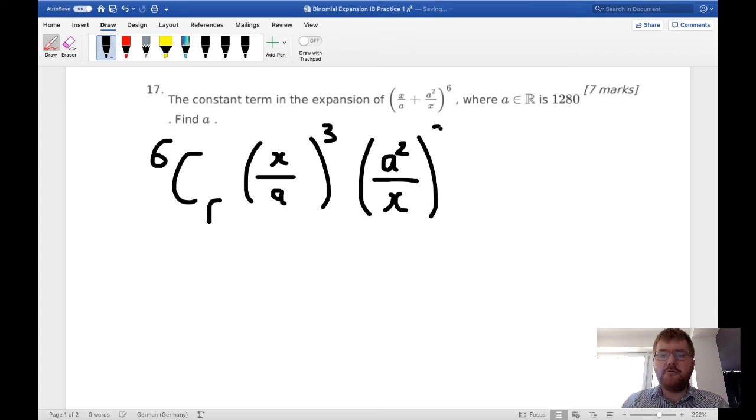So if we try 3 here and 3 here, and expand out, I'll come back to the binomial coefficient in a moment. If I expand this bracket out, well I get x³ at the top, and I get a³ at the bottom. Remember the cubed applies to both the numerator and denominator. And if I do the same to this one, well a² to the power of 3 gives me a⁶ divided by x³, and that's exactly what we want here.